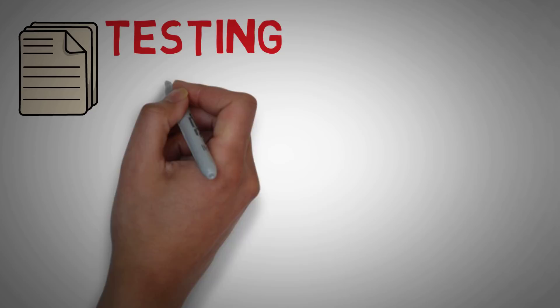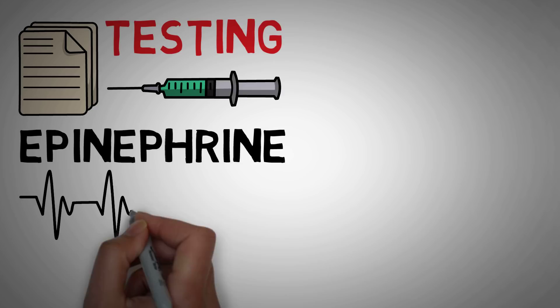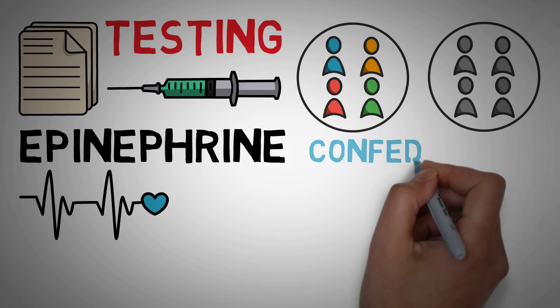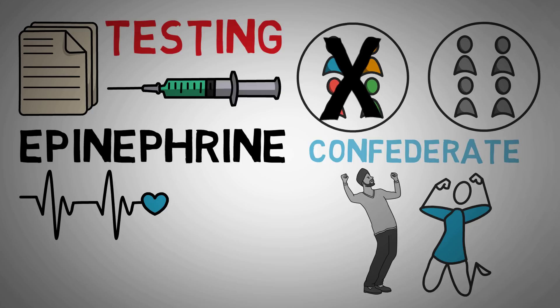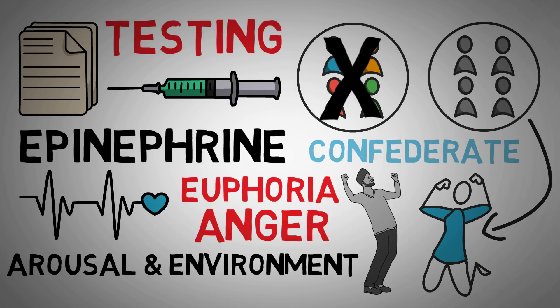Schachter and Singer tested their theories by conducting an experiment. They injected participants with epinephrine, a hormone that causes an increased heart rate and a few other side effects. Some participants knew they were going to experience these side effects, but some of them didn't. Then the participants were placed in a room with a confederate who either acted euphorically or angrily towards them. The participants that knew about the side effects did not report significant changes in their emotions. But the participants that didn't know about the side effects were much more likely to report changes in their mood — those in the room with the euphoric confederate labeled their emotions as euphoria, and those with the angry confederate labeled their emotions as anger. This showed that both physical arousal and environmental cues influence how a person recognizes and identifies their emotions.